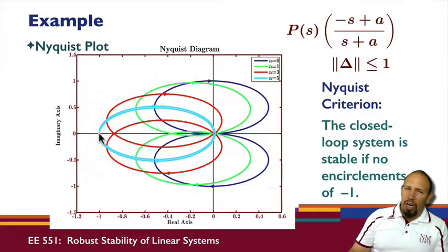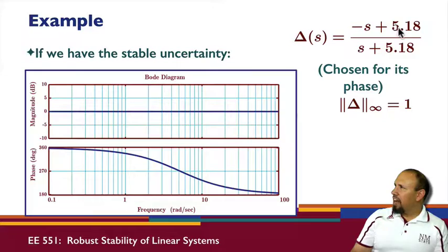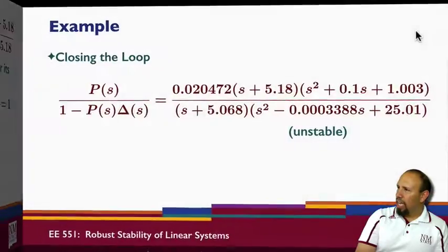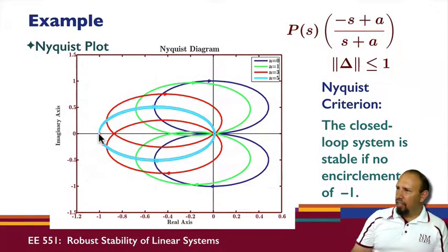It turns out at a equals five we're not quite touching it. But when a is equal to 5.18, we are actually encircling it. So the Nyquist plot can show us that as we vary this all-pass function, we can see how we encroach upon that minus one point.